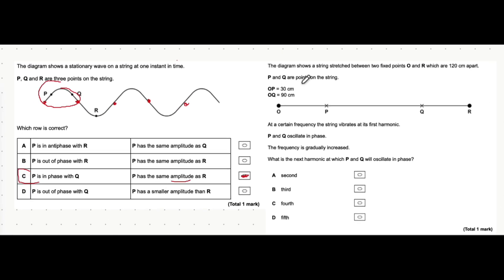Lastly, P and Q are points on a string. OP is 30 centimeters, let's call that 0.3 meters. OQ is 0.9 meters. At a certain frequency, the string vibrates in its first harmonic. That's the first type of stationary wave where there's two nodes and one antinode in the middle of them.